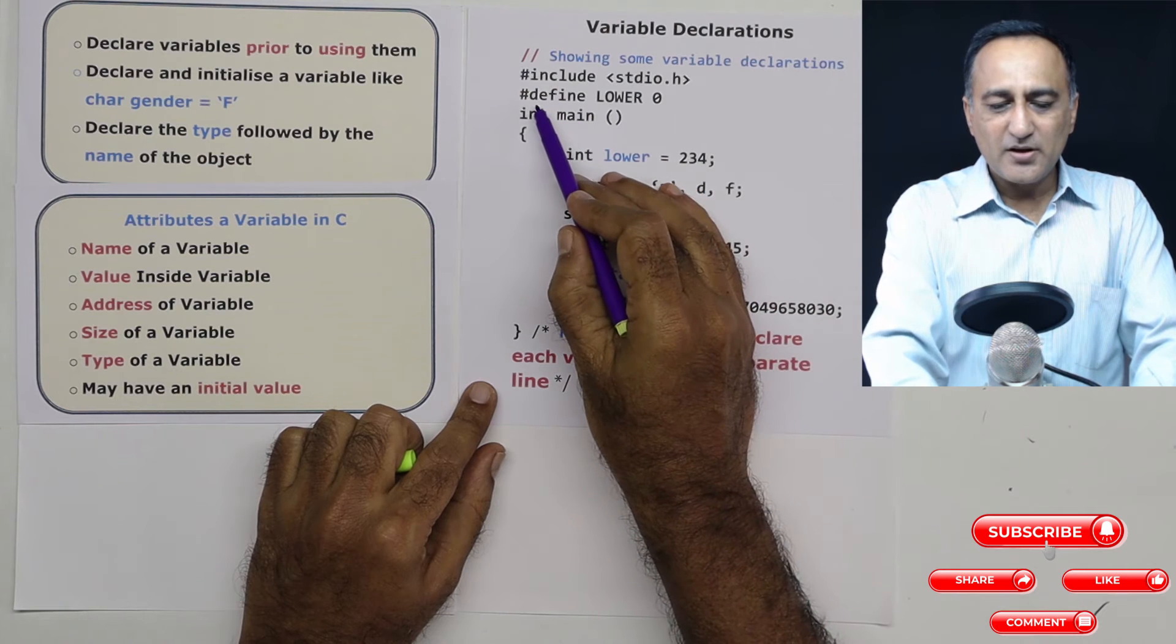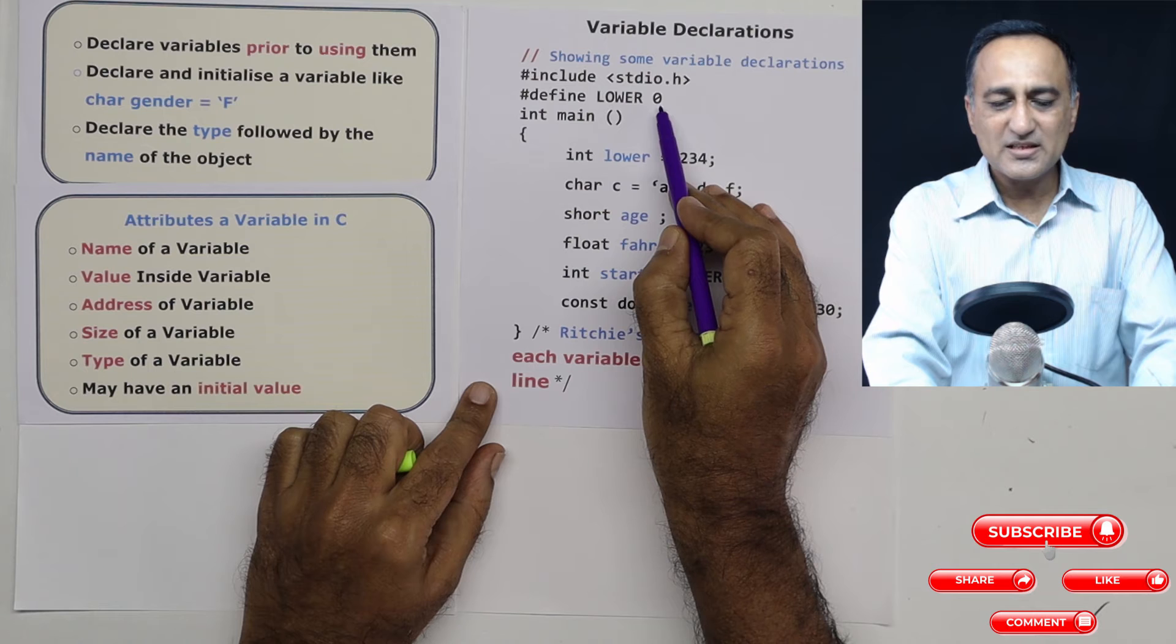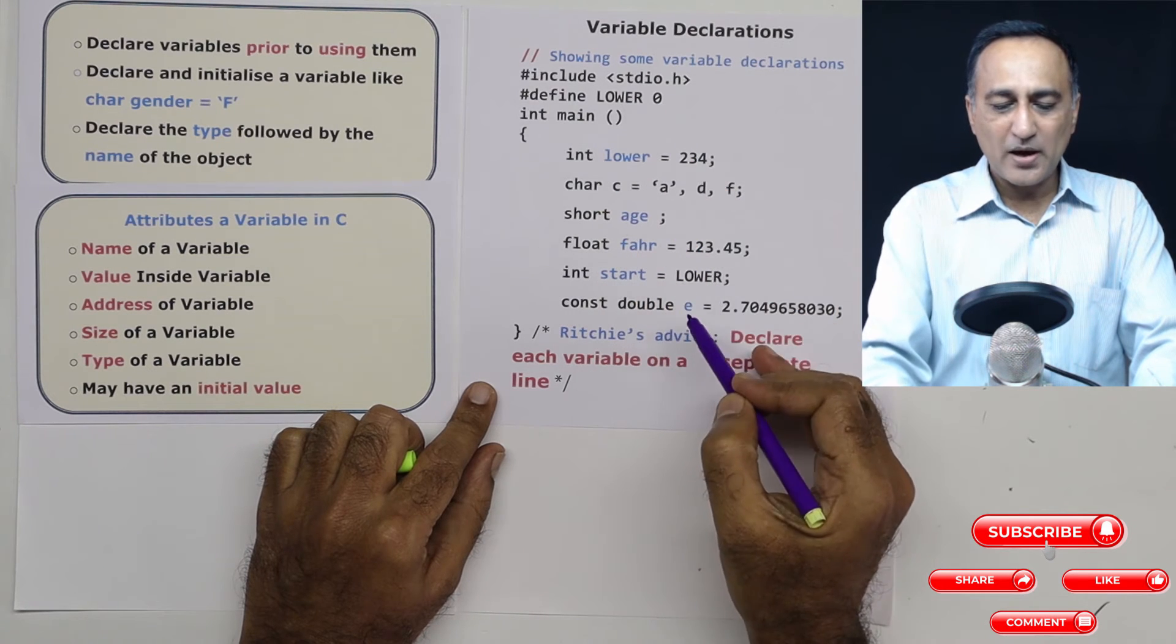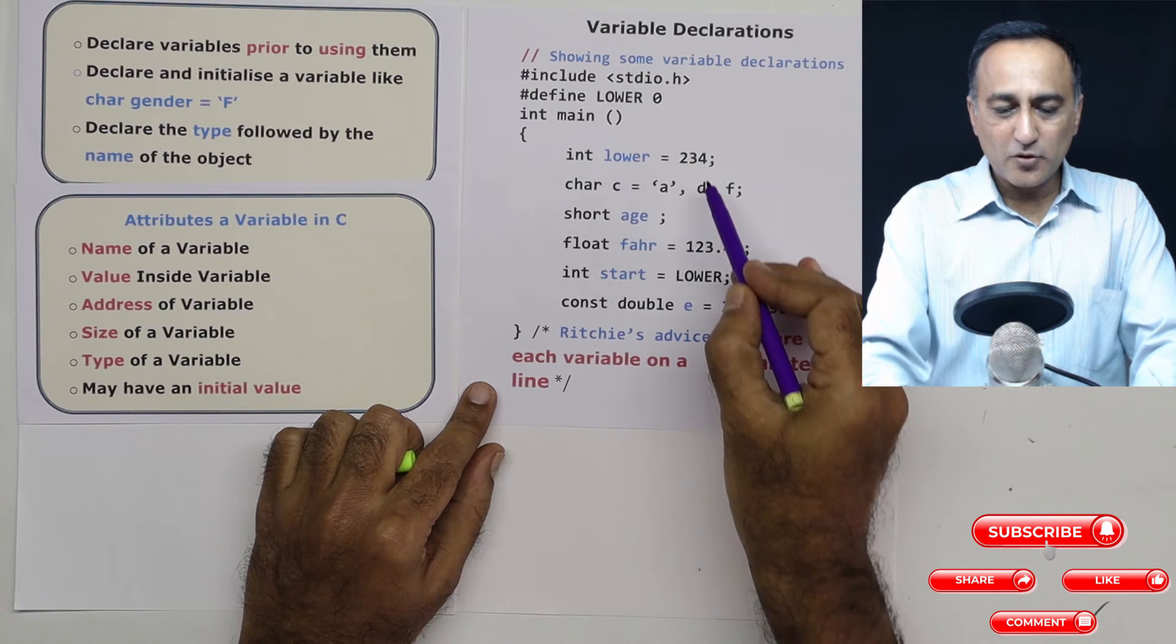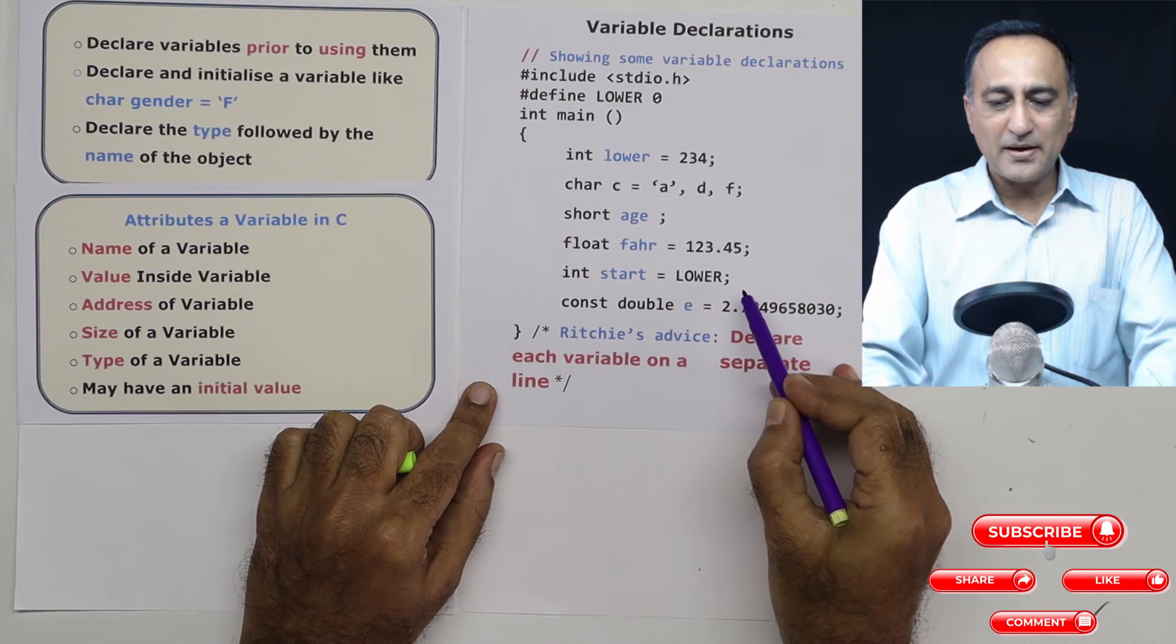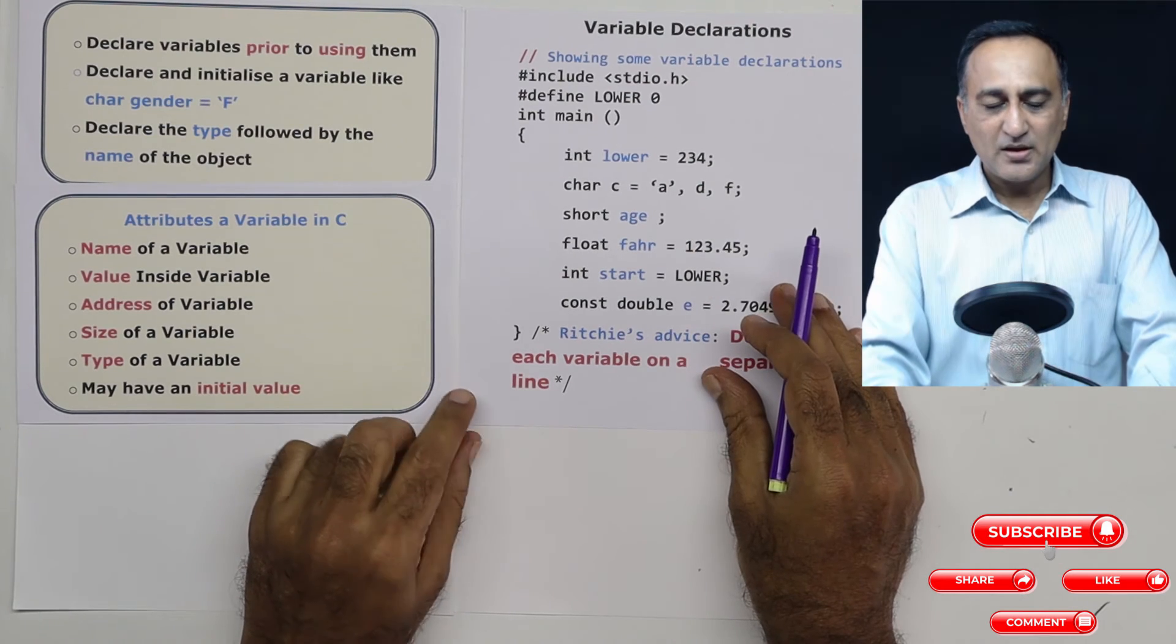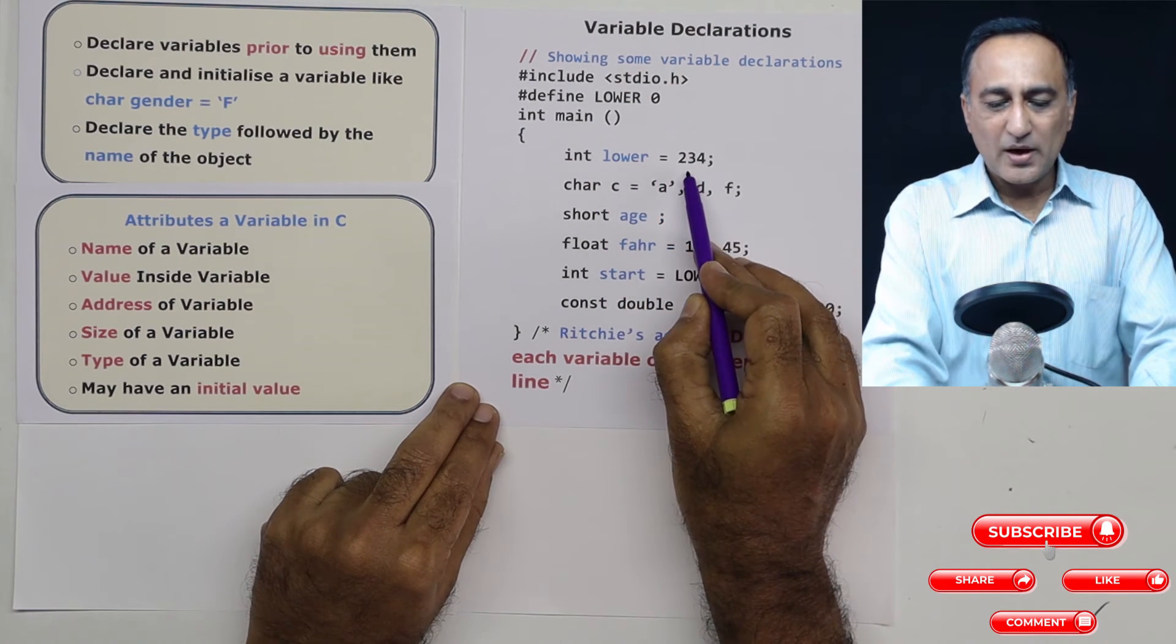Then I have using the hash define or the preprocessor directive, I have said hash define lower is zero. So wherever lower is going to occur, it's going to be replaced by the value zero. For example, here lower is going to occur. So before this code even goes to the compiler, this lower is going to be replaced with zero.